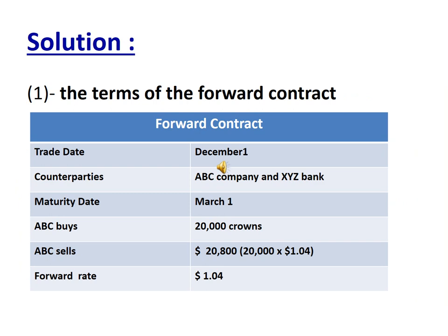For the first question about the terms of the forward contract: the trade date will be December 1st; the counterparties are APC Company and XYZ Bank; the maturity date is March 1st. APC will buy 20,000 crowns and will sell 20,800 dollars, which is the result of multiplying 20,000 crowns by the forward rate of 1.04.